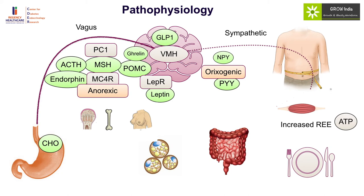There is an important permissive role of leptin in all these regulatory pathways. Therefore, in situations like anorexia nervosa, malnutrition, or systemic illnesses like celiac disease — when body fat percentage is very low — leptin levels will be very low, and therefore activities like growth, bone formation, puberty, and pregnancy are deferred.